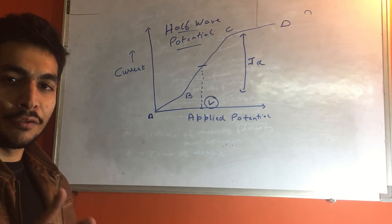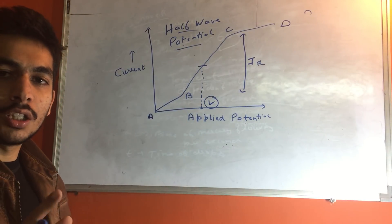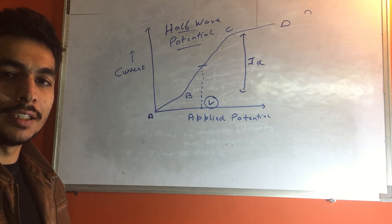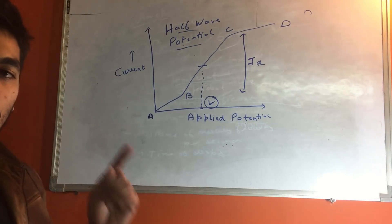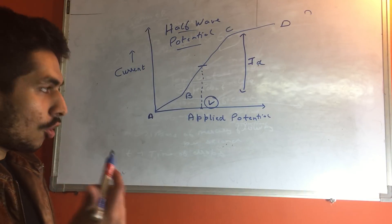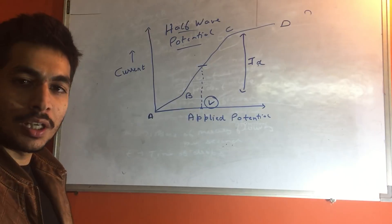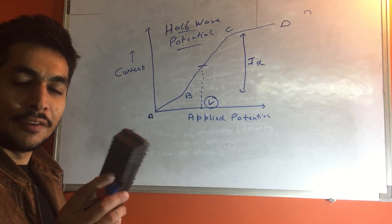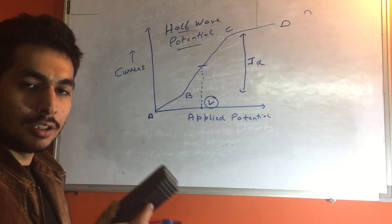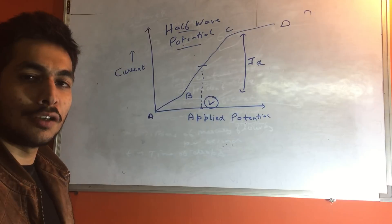One very important point: the diffusion current is dependent on the concentration of the analyte, but the half wave potential is not dependent on the concentration of the analyte — it is independent of the concentration. The half wave potential is independent of concentration, whereas the diffusion current is dependent on the concentration of the analyte. The diffusion current gives us quantitative analysis (how much analyte is present), whereas the half wave potential gives us qualitative analysis (what kind of analyte is present).